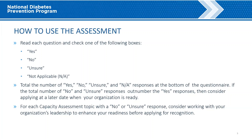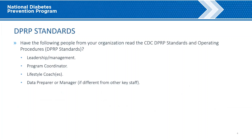Let's talk through the questions. DPRP Standards. The first question on the assessment simply asks if your organization's staff has read the DPRP Standards and Operating Procedures. The DPRP Standards is the single most important document that any organization seeking or maintaining CDC recognition should be familiar with. Everything an organization needs to know about the National DPP Lifestyle Change Program and what it takes to become fully recognized is found in the standards.